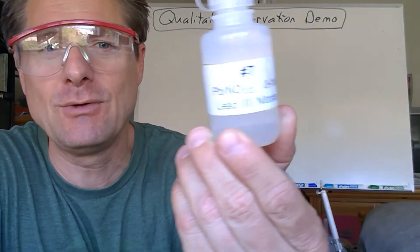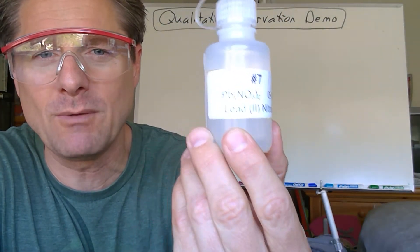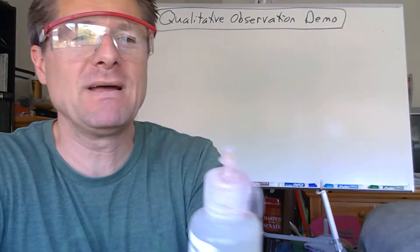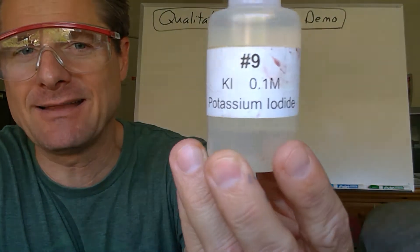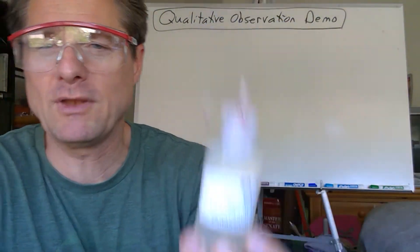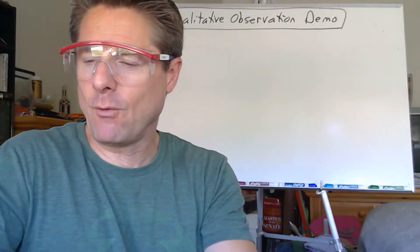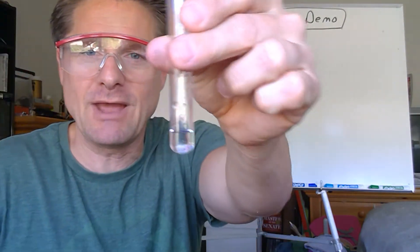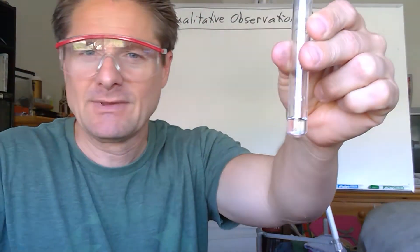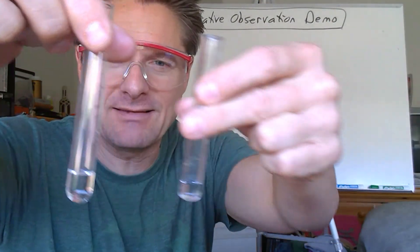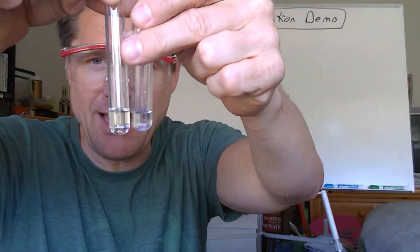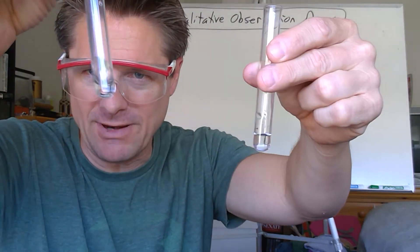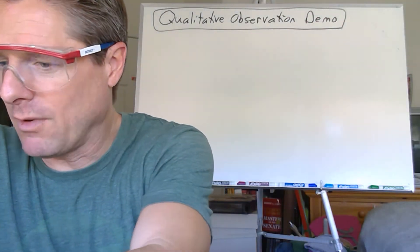So what we're going to do is mix some lead(II) nitrate solution — 0.1 molar — and some potassium iodide solution, also 0.1 molar. I've already put these into test tubes. Here's the lead(II) nitrate solution and here's the potassium iodide solution. The volumes aren't quite the same, so I'm going to pour a little out to equalize them.